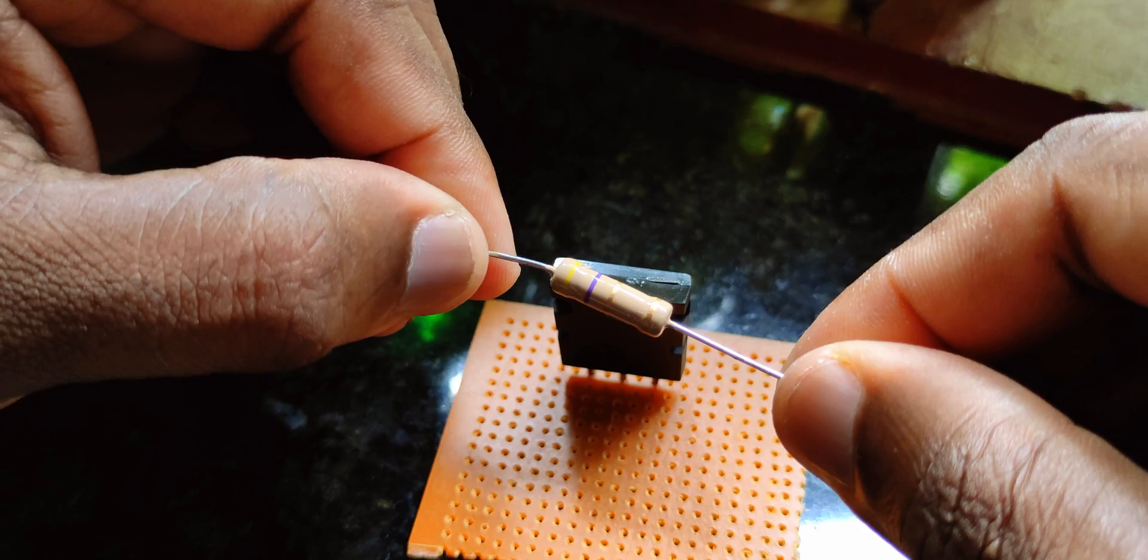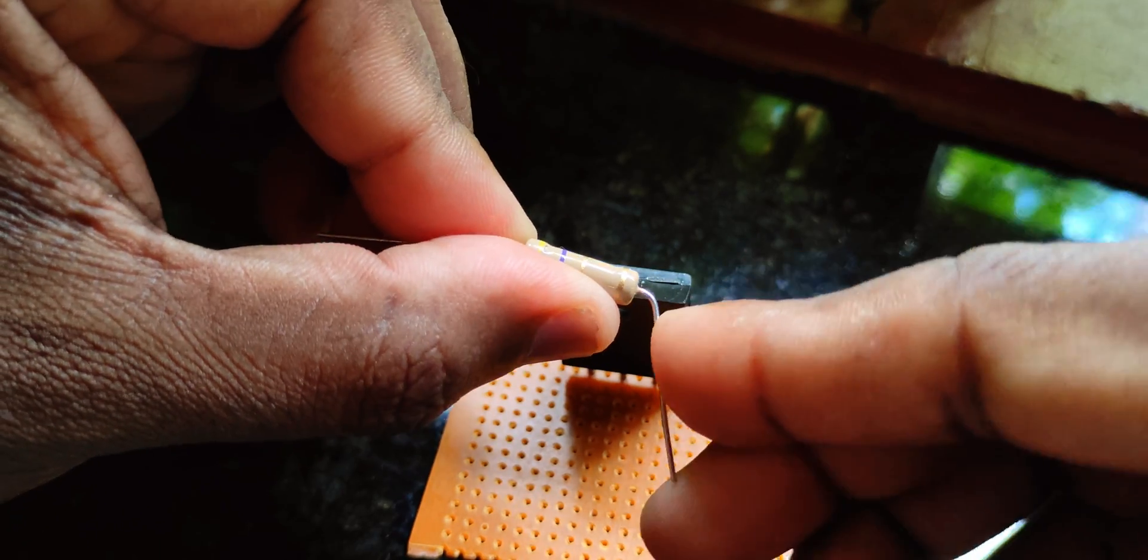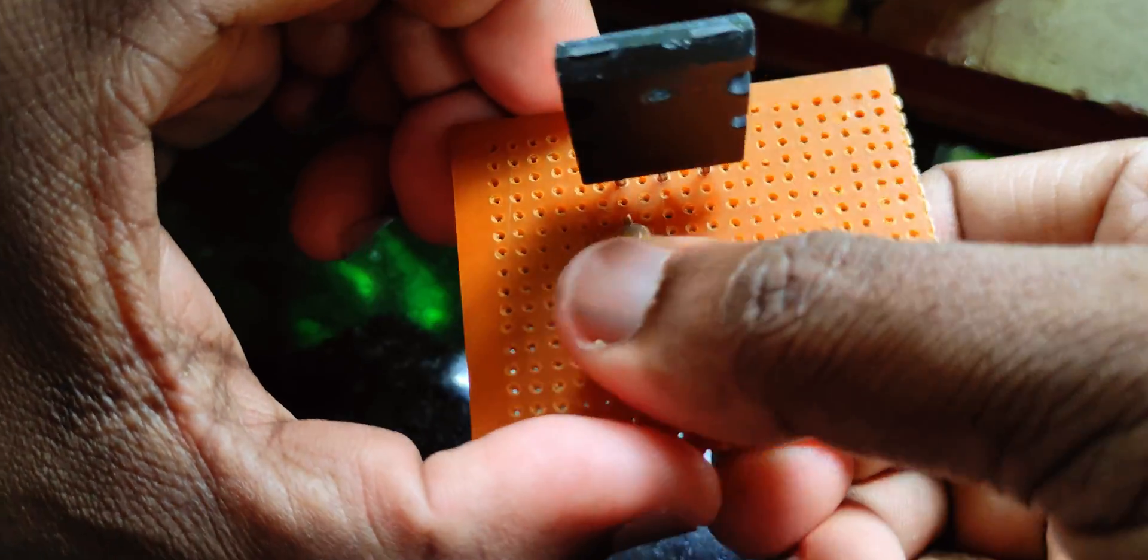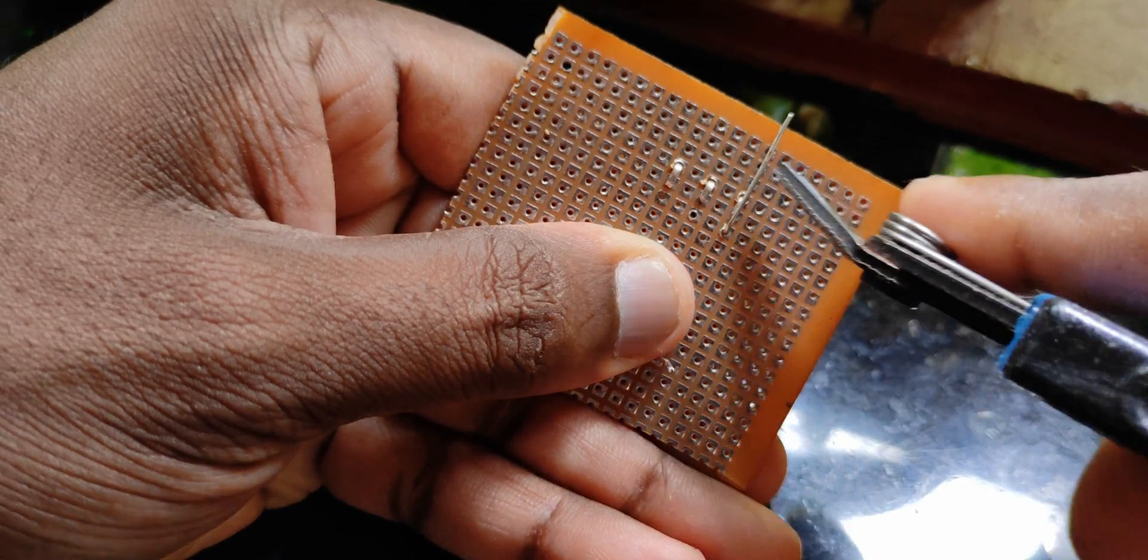The second step: take a 4.7 ohm 2 watt resistor and bend the terminals like this. Insert it to the base and bend it over to the base. Cut out the excess leads and solder it well.